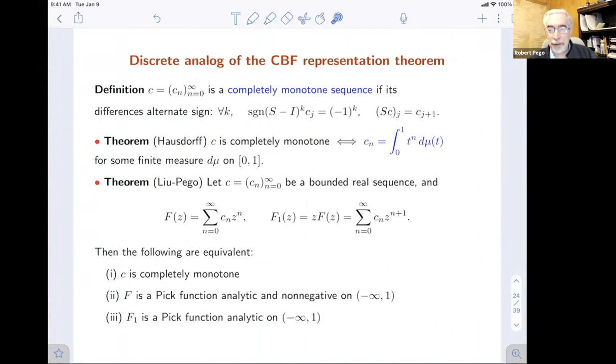We get that result out of an analog of the Pick function representation theorem, which relates to the Hausdorff moment problem. The Hausdorff moment problem here is Hausdorff noticed that moments of a measure on 0,1 produce a completely monotone sequence. The higher order differences of the sequence alternate in sign. That's an if and only if. For a finite measure on 0,1, a sequence is completely monotone if and only if it's a moment sequence.